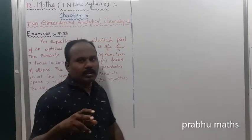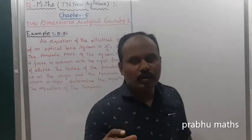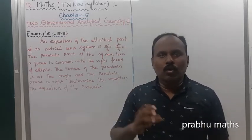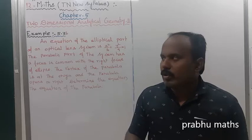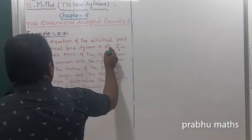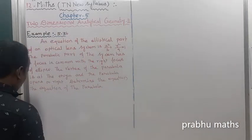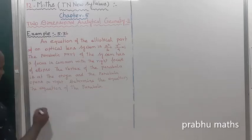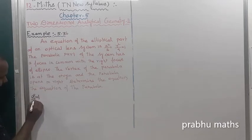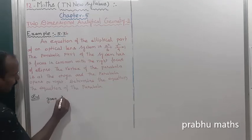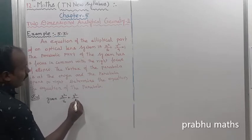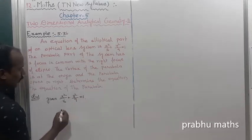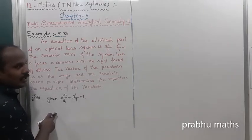One ellipse and one parabola are considered, and both share a common focus — specifically the right side focus. The given equation is x² divided by 16 plus y² divided by 9 equals 1, so a² = 16 and b² = 9. The major axis is along the x-axis.